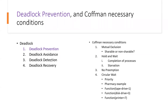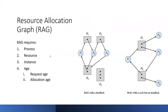Hi everyone, I hope everything is fine. In the previous session, we talked about deadlock prevention and avoidance, so now we have to look at deadlock detection. If a deadlock occurred, how can we detect it? Before that, we will cover a little topic: the resource allocation graph. Then we will learn different ways of how we detect deadlock.